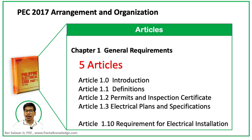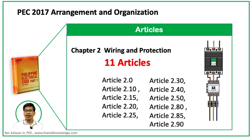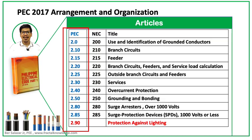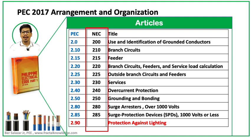Chapter 2 is dedicated to wiring and protection and has 11 articles: Articles 2.0, 2.10, 2.15, 2.25, 2.30, 2.40, 2.50, 2.80, 2.85, and 2.90. For comparison, PEC has 11 articles in Chapter 2 while NEC has 9 articles under its Chapter 2.